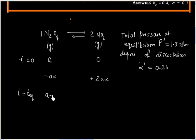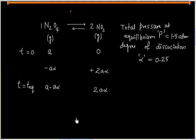At equilibrium we will have A minus A alpha moles of N2O4 and 2A alpha moles of NO2.